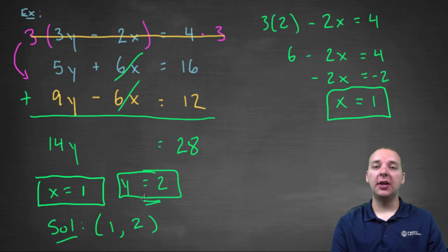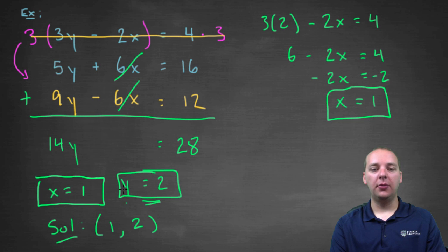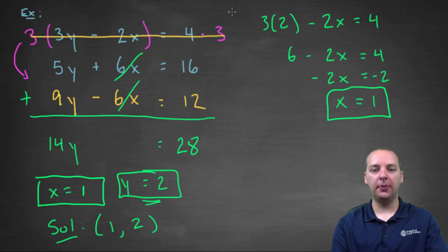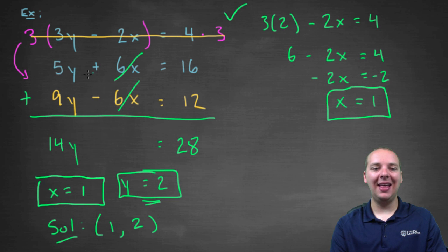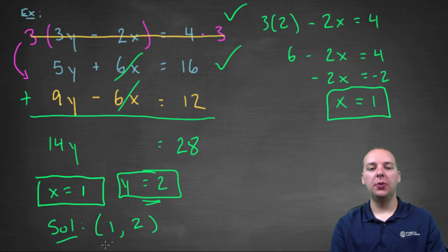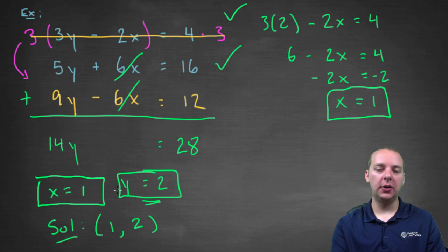The solution to the system is the ordered pair (1, 2). You can check this by plugging it back into the system: two for y and one for x. Six minus two is four — that looks good. And ten plus six does equal sixteen — perfect. So we found the solution using the addition method.